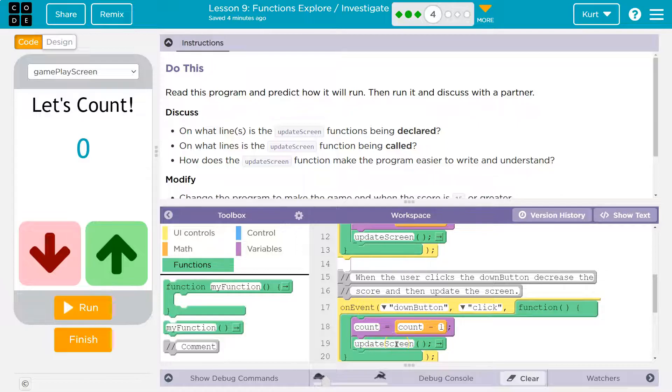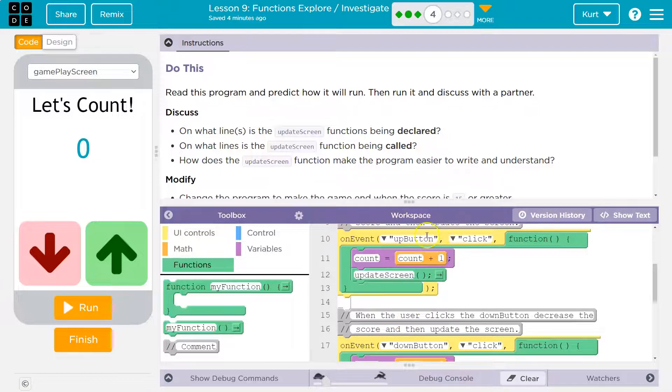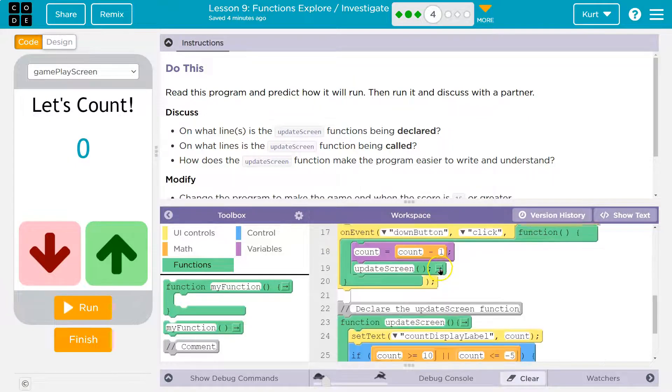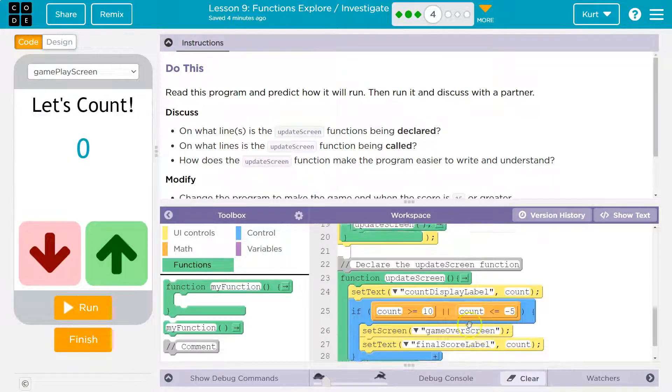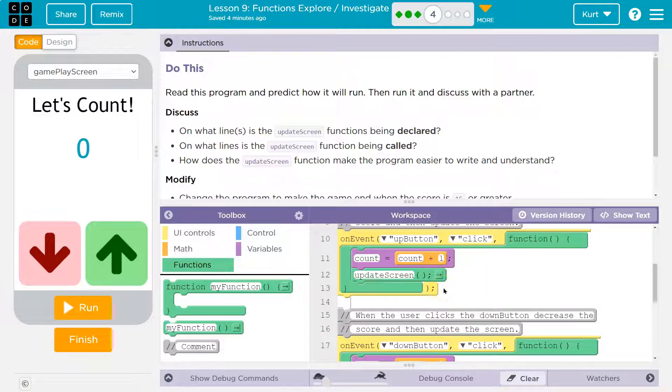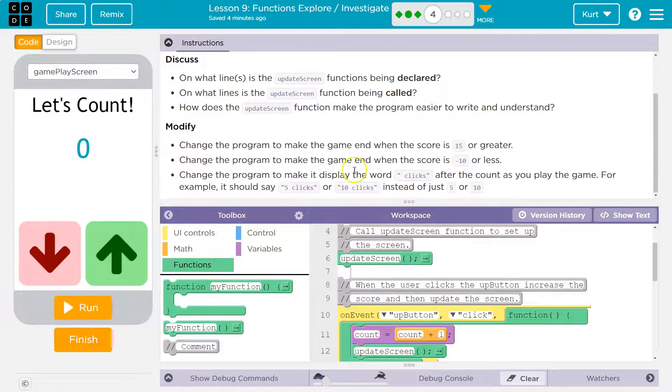So on event down button, update screen. Oh, I know what that's doing—you're taking away one, you're updating the screen. On event up button, oh, update screen. I know what that's doing—you're adding one and then updating the screen, as opposed to having this whole big chunk of code here and here each time. One, you'd be repeating yourself. Two, it's harder to read.